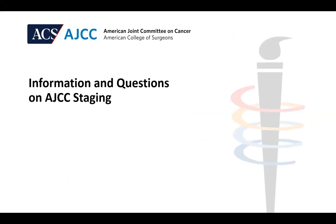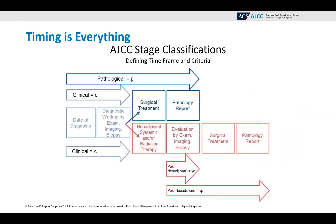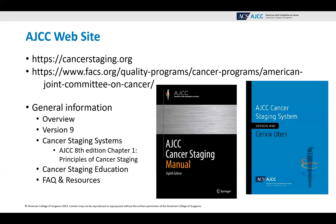For information and questions on AJCC staging, the Timing is Everything graphic is available on the AJCC website for free download. It can help you understand the timeframe and criteria, giving an overall picture of the different stage classifications and how they relate to each other. The AJCC website can be accessed at cancerstaging.org, with information including an overview of version nine, cancer staging systems, the AJCC 8th edition chapter one principles of cancer staging available for free download, cancer staging education, frequently asked questions, and other resources.